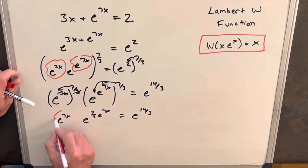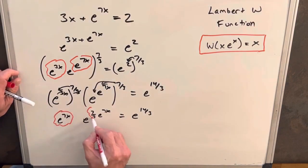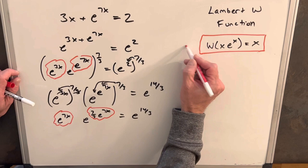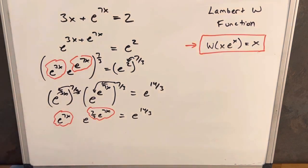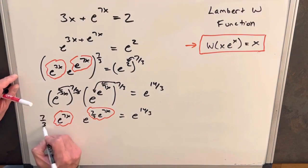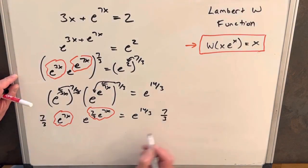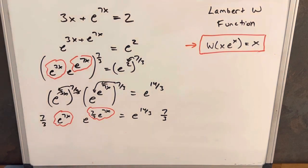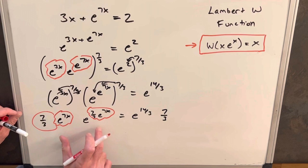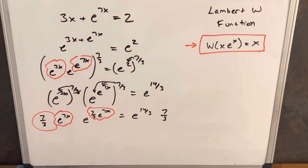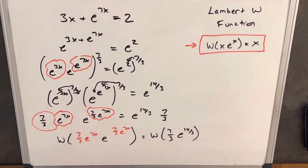At this point you might think we have a problem because our term here and our term here don't quite match and so this formula doesn't quite work yet. But now it's just a constant value. That's just a number that we can multiply on both sides. So we can multiply 7 thirds on the left and 7 thirds on the right. And now we actually do have, we are in the right format. We're matching both these and so that's going to allow us to apply the Lambert W function. So now take the Lambert W function on both sides.